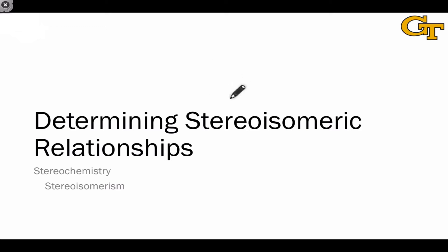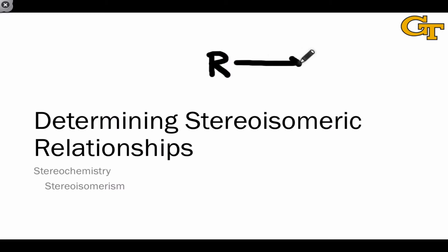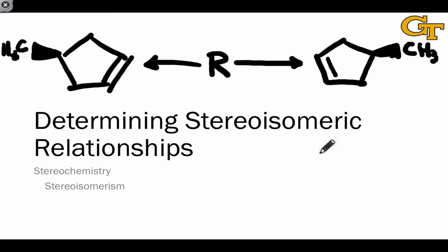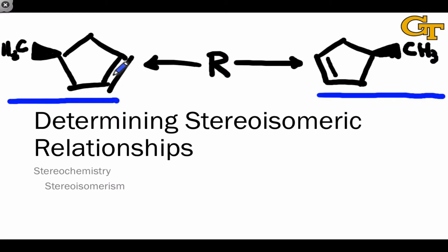Having defined in detail the two types of stereoisomeric relationships, we now want to be able to identify the relationship between two molecules given their structures. This is important for a number of reasons, but to highlight one: there are many reactions in organic chemistry that have stereochemical aspects in the sense that they establish or destroy stereocenters. A given reaction type might create enantiomers through no difference in electron flow aside from how the reactants approach each other spatially. To appreciate the similarities and differences between the reaction paths leading to one enantiomer or the other, we need to first be able to identify the isomeric relationship between the two potential products.